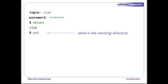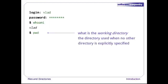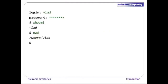Now that we know who we are, we can find out where we are using pwd, which stands for Print Working Directory. This is our current default directory, i.e., the directory the computer assumes we want to use unless we specify something else explicitly. The computer's response is /users/vlad.